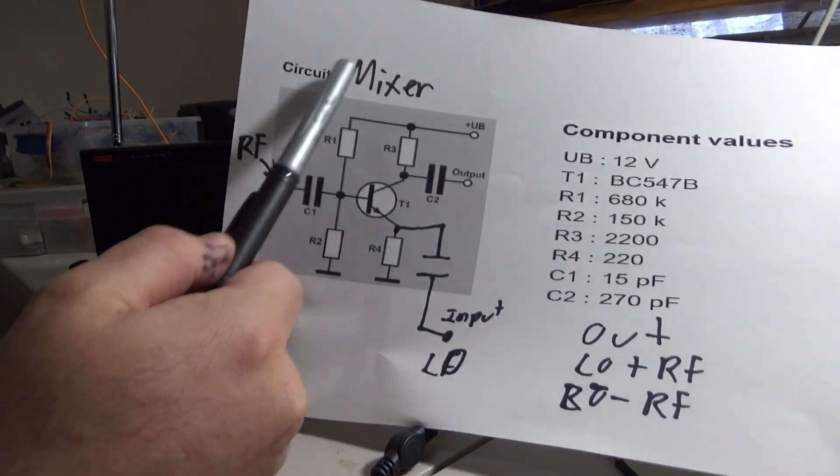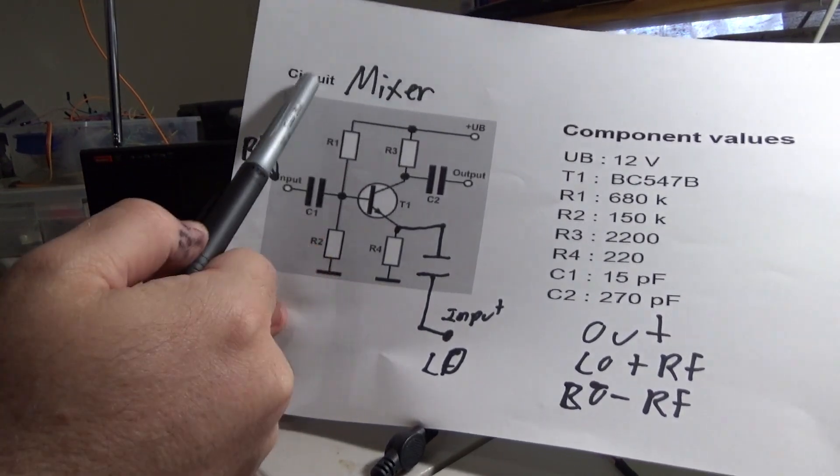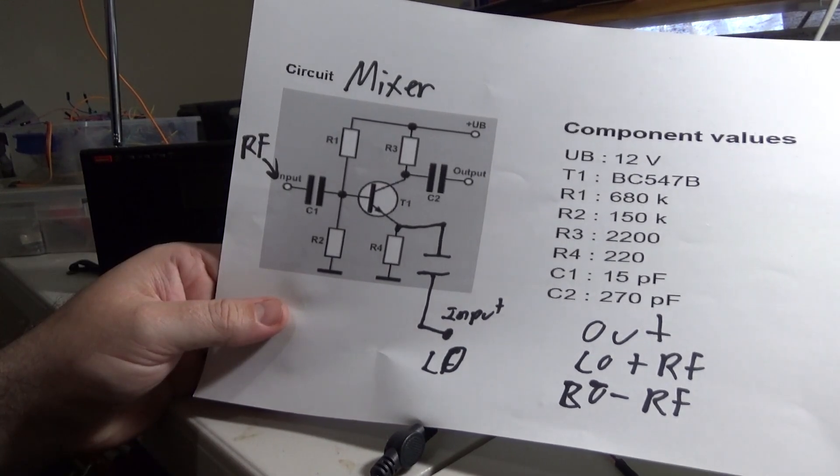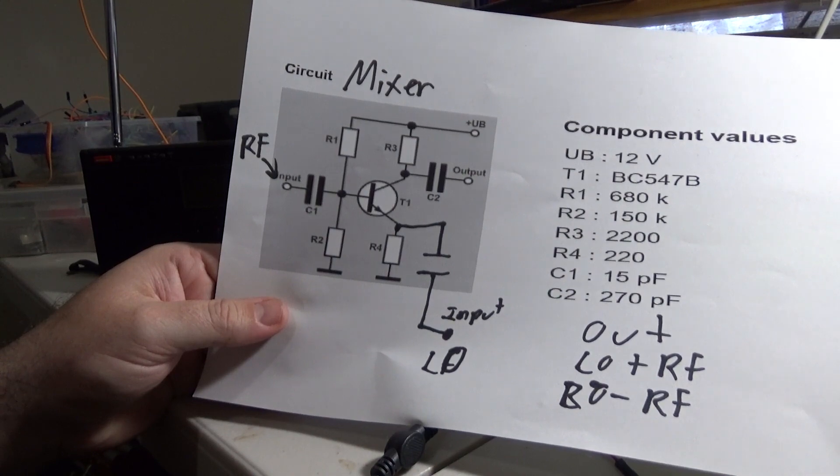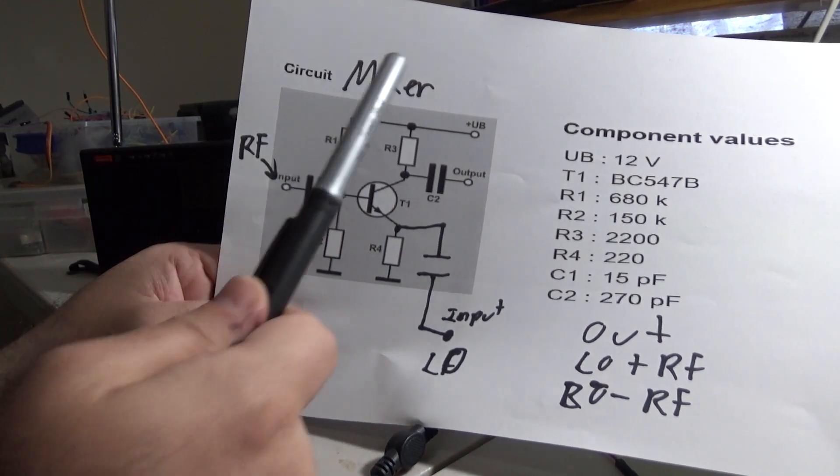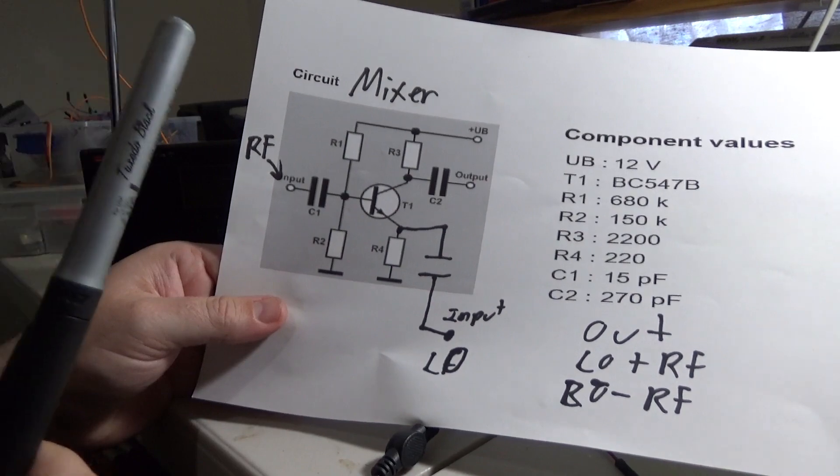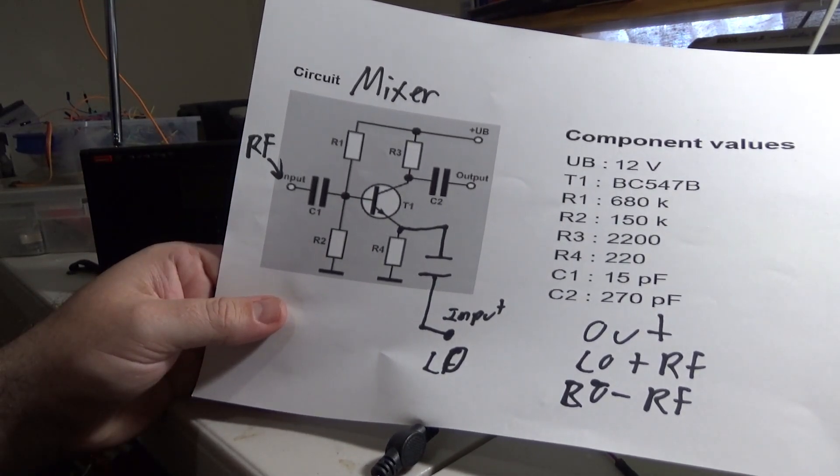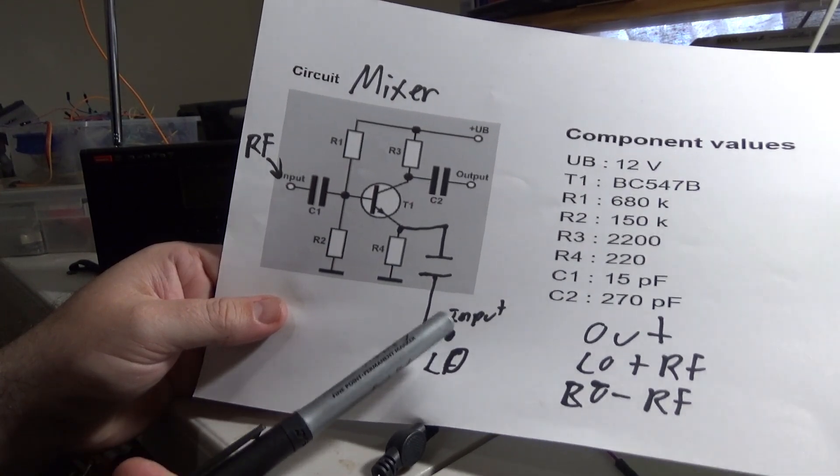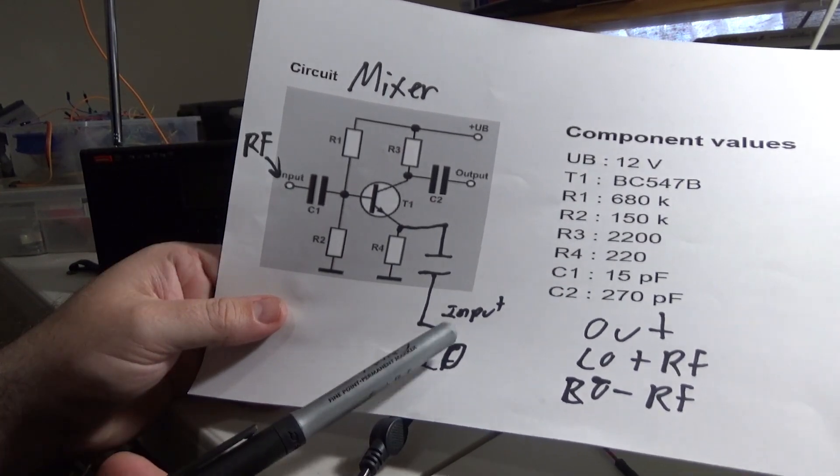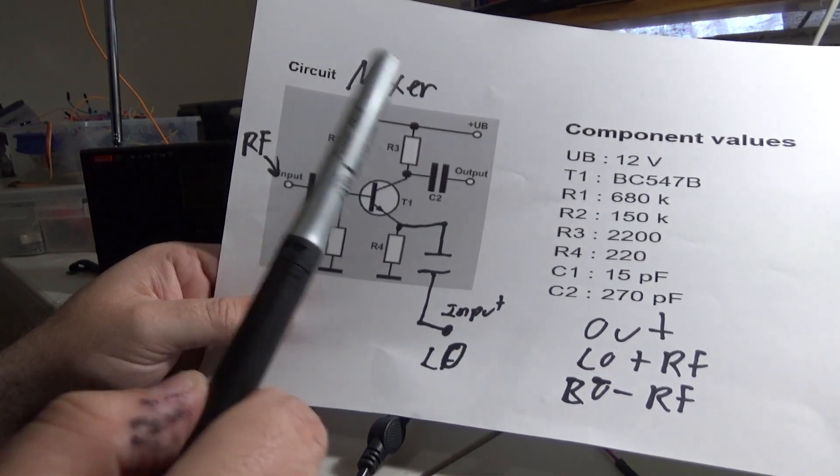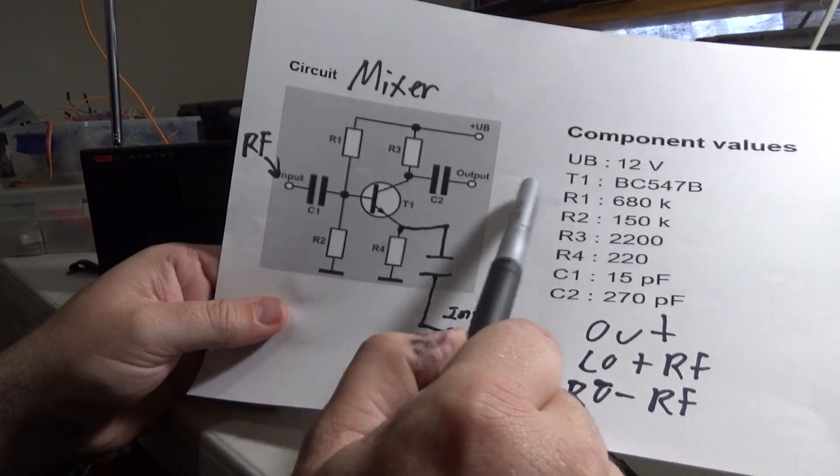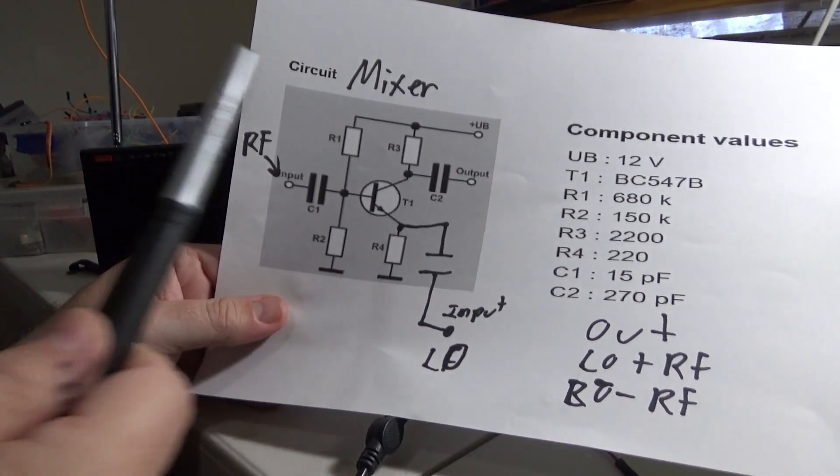Radio frequency mixers are something that you might want to look up because they're fairly interesting and they form the backbone of almost all radios in existence today. What they do is they take a radio frequency input from the antenna and the input from a local oscillator, which is just a sine wave, and they mix them together and produce an output.